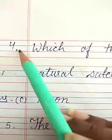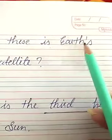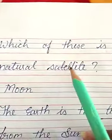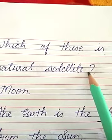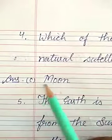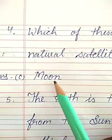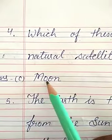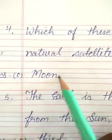Number 4. Which of these is Earth's natural satellite? What is the natural satellite of the Earth? The answer is Moon. Moon is the natural satellite of the Earth. Option C — Moon. M-O-O-N, Moon.